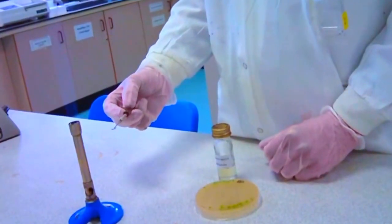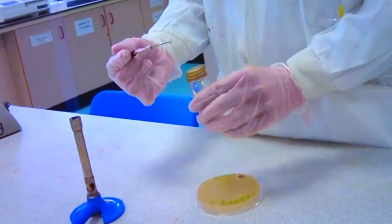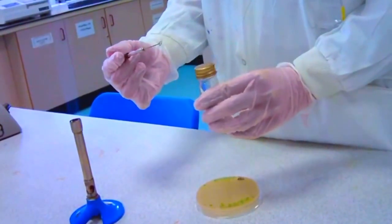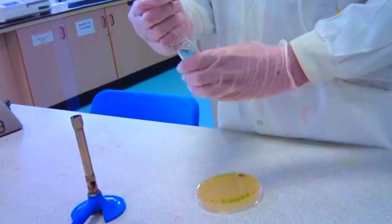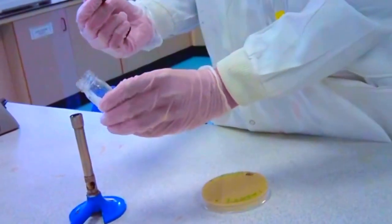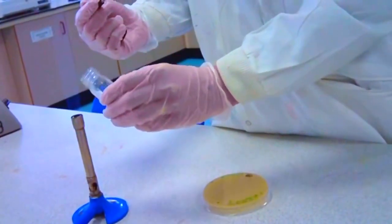Without putting the loop down, lift the test tube containing the inoculum with your left hand. Remove the cap of the bottle with the little finger of your right hand. Pass the neck of the bottle through the flame 3 or 4 times so it becomes sterile.